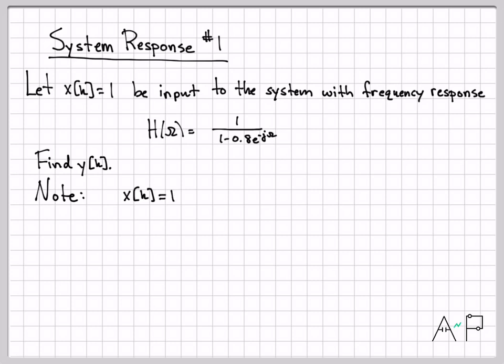No matter what integer k is, one raised to a power is still this one. And actually, one is also equal to e to the j times zero, right? e to the zero is one.